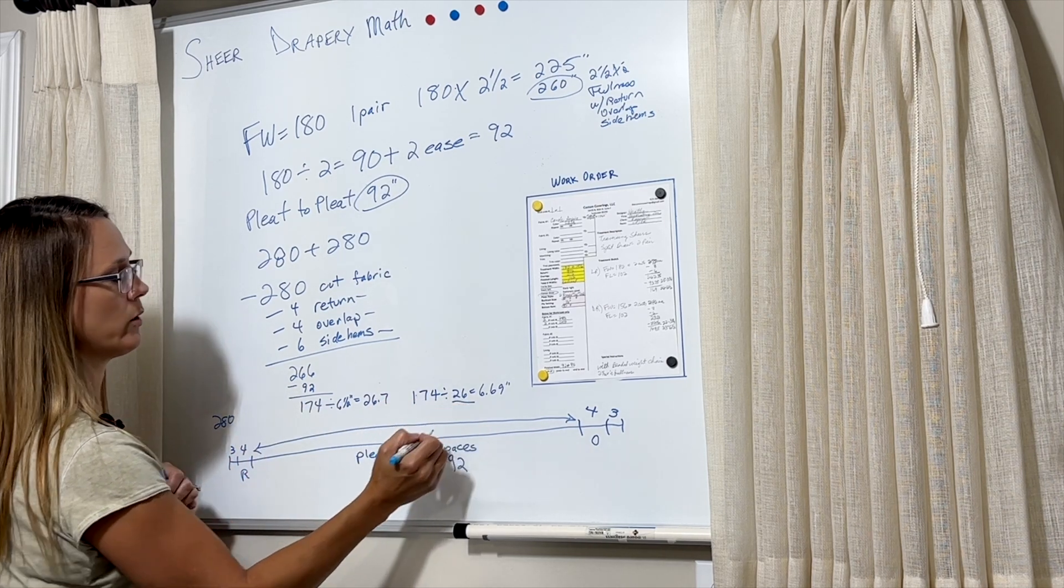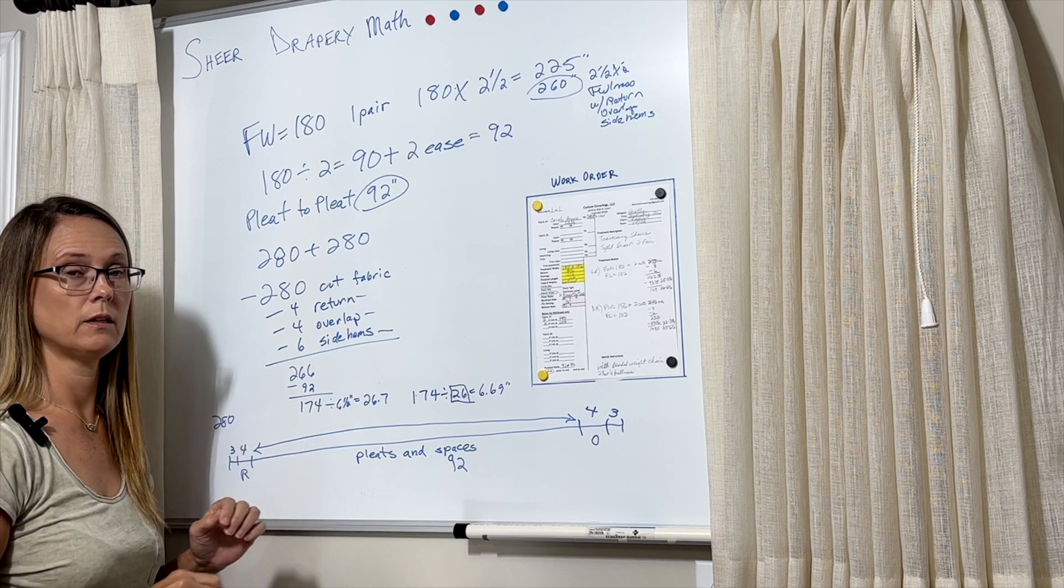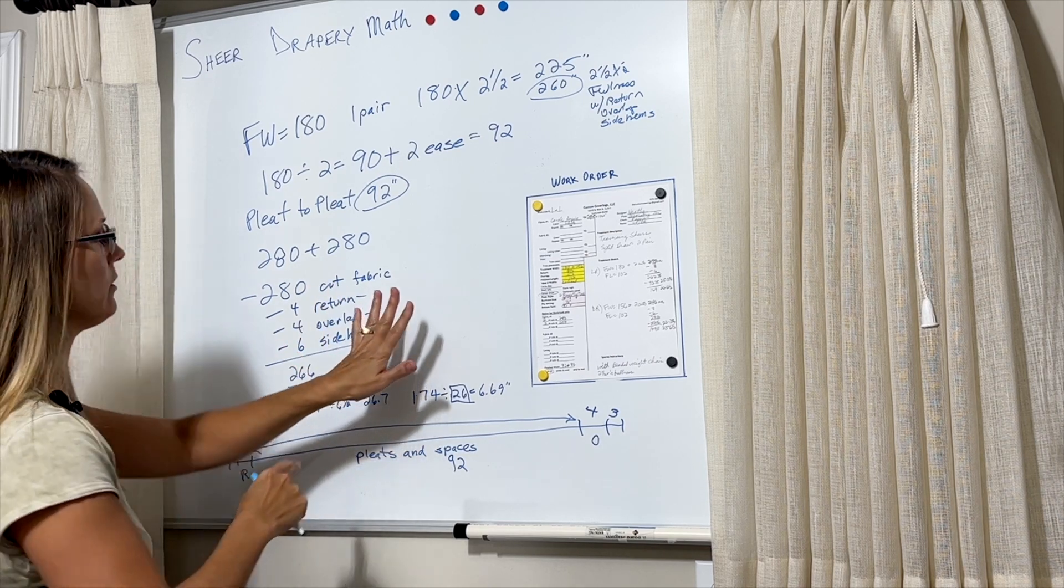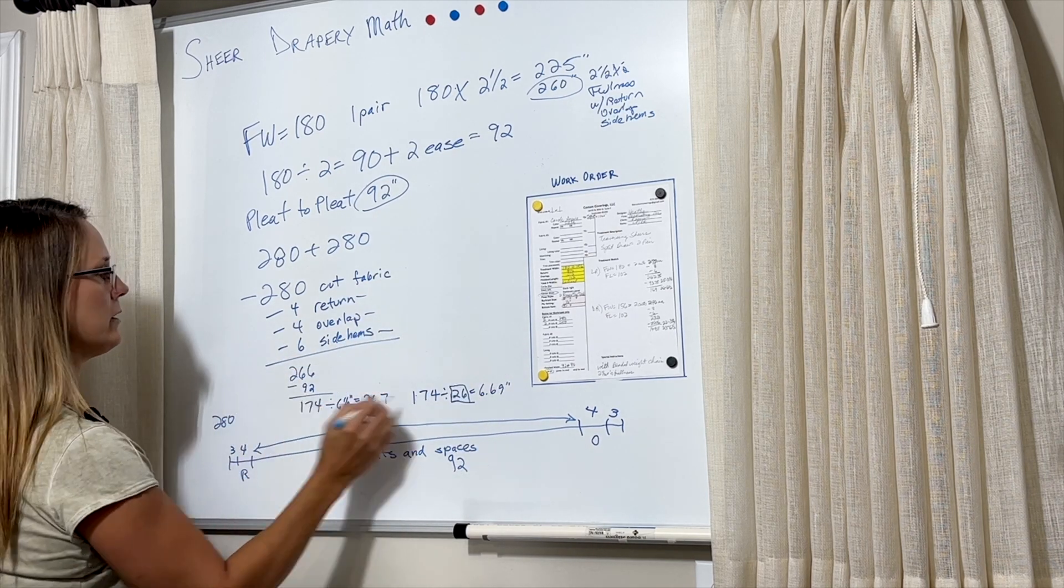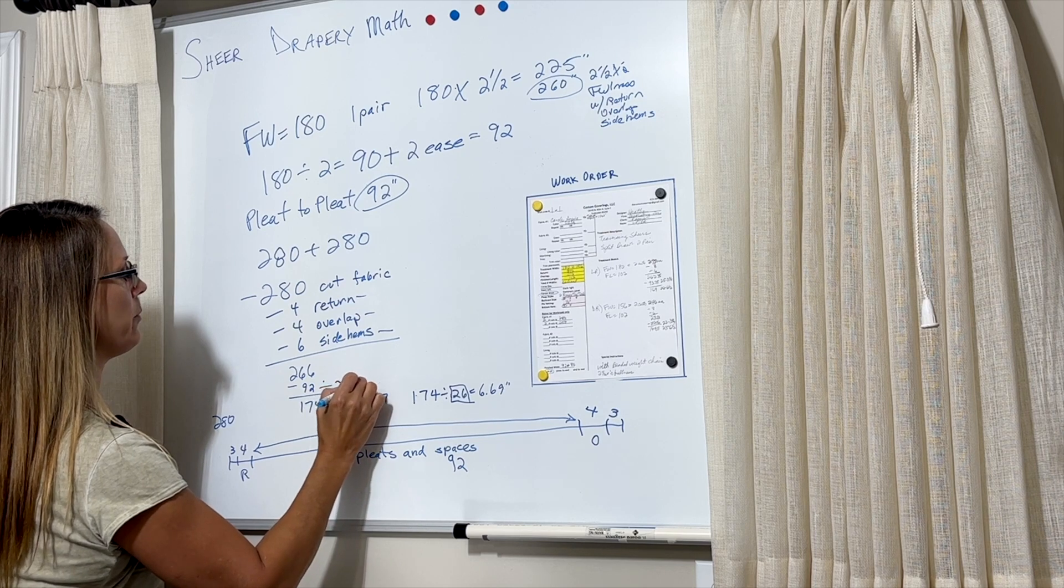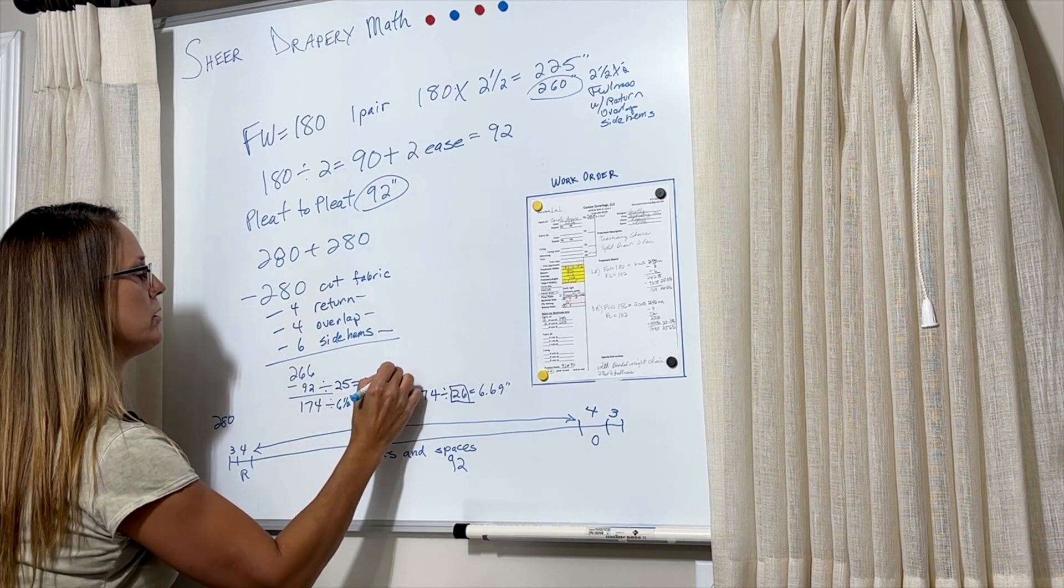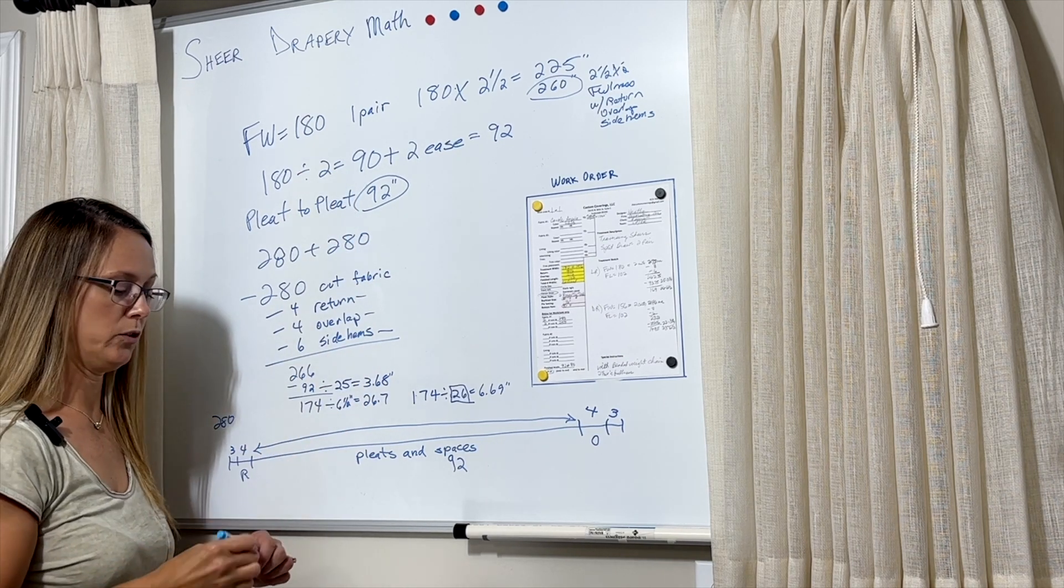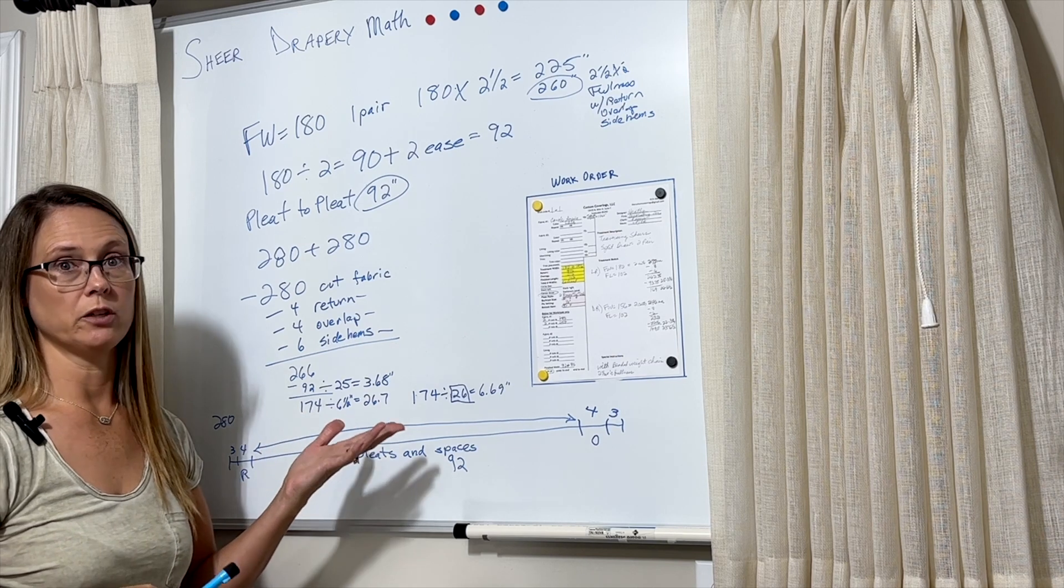And then from there, if we're going to stick with 26 pleats, then we know we need 25 spaces because we always need one less space than pleat. Think of your hand, five fingers. How many spaces are in between your fingers? One, two, three, four. So one less space than pleat. And then since we know we need 25 spaces, we're going to do 92 divided by 25 is 3.68. So that's how many inches each space will be. So that's the basic formula for how to figure your pleats and spaces on any kind of pleated drapery, whether it's sheer or lined drapery.